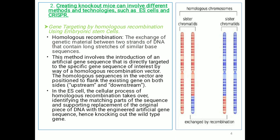The homologous sequences in the vector are positioned to flank the existing gene — the gene which we are going to knockout — on both sides, i.e., on upstream and downstream. So in the embryonic stem cell, the cellular process of homologous recombination takes over, identifying the matching part of the sequence and supporting replacement of the original piece of DNA with the engineered artificial homologous gene sequence, hence knocking out the wild type gene.